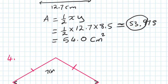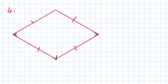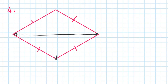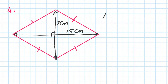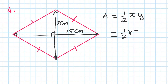For number four, this rhombus has one diagonal of 15 centimeters all the way from one end to the other, and the other diagonal is 7 centimeters. Area of a rhombus is a half xy, so a half times 7 times 15 gives 52.5 centimeters squared.